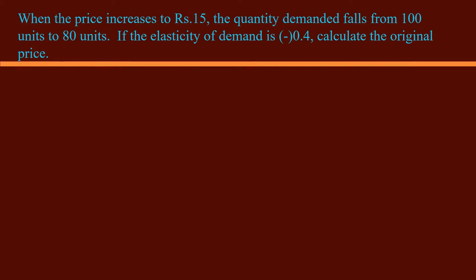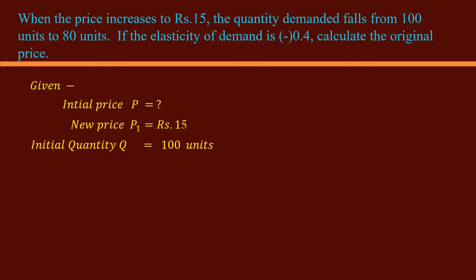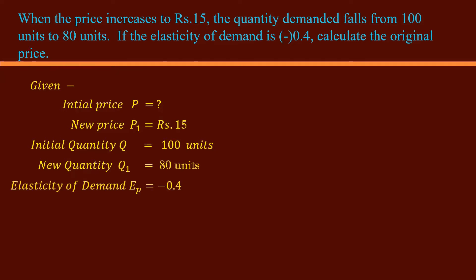The problem: When the price increases to 15 rupees, the quantity demanded falls from 100 units to 80 units. If the elasticity of demand is negative 0.4, calculate the original price. State the given values. Initial price P: we have to find. New price P1: 15 rupees. Initial quantity Q: 100 units. New quantity Q1: 80 units. Elasticity of demand: negative 0.4. As we have to calculate initial price, write the formula with P on the left hand side.